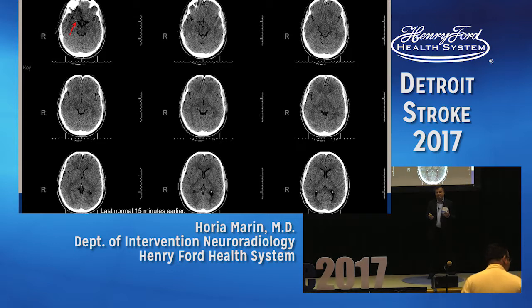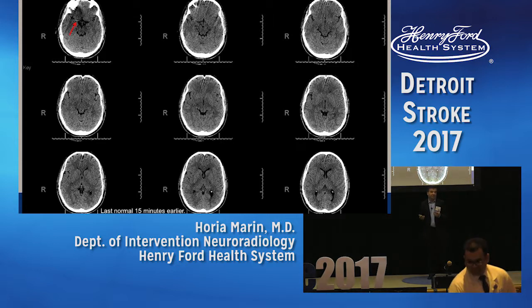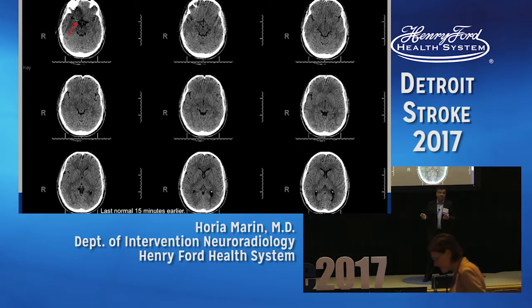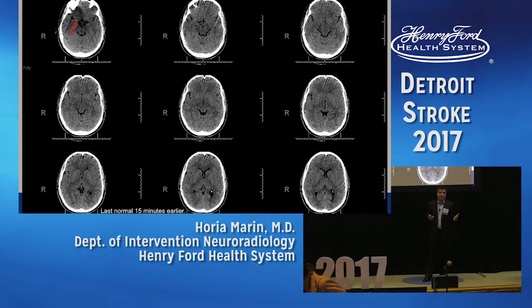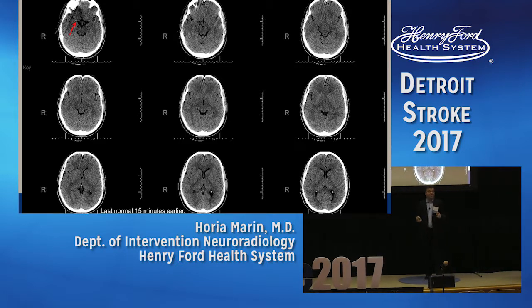The only thing we need to know in order to give a patient IV thrombolysis in the first three hours is whether there is a hemorrhagic lesion or not. So once we rule out hemorrhage, the patient goes for IV tPA.